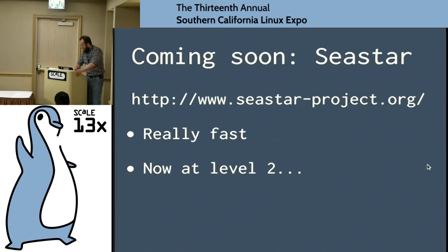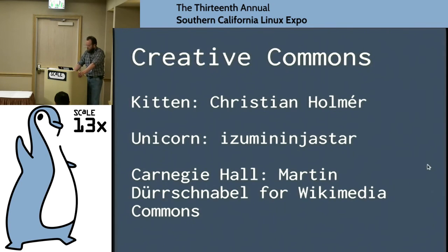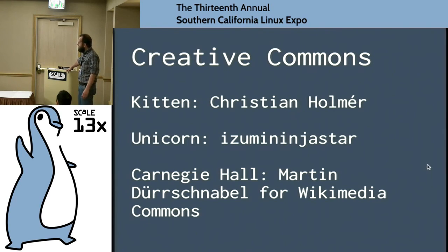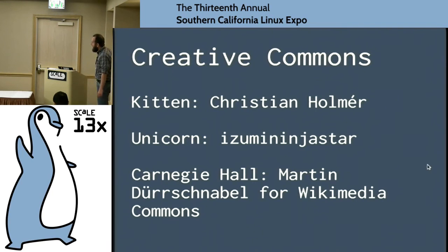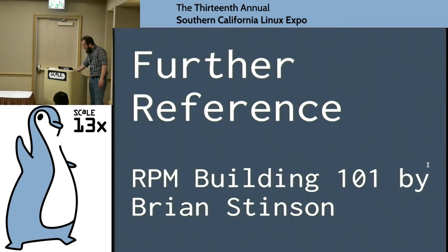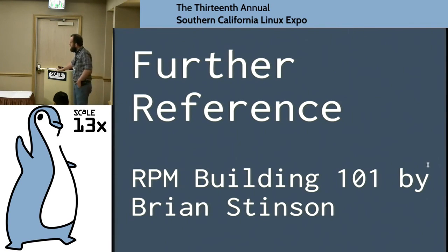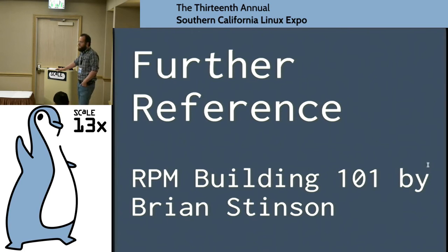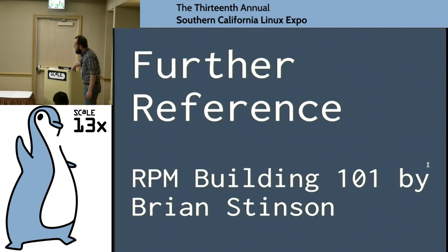Seastar is coming along — there will be demo code for this shortly. I would like to thank the Creative Commons photographers for the pictures of the kitten, the unicorn, and Carnegie Hall. Further reference: a talk called RPM Building 101 that actually happened in Europe last week captures some of the modern wisdom in how to make RPM building productive and joyful. Check it out.